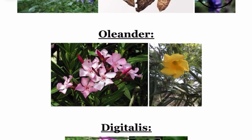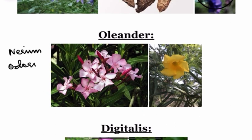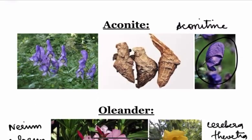Then we have Oleander, which has two different types: Nerium Odorum and Cerebrothivacea. The active principle in Nerium Odorum is Follarin or Oleanderin, and in Cerebrothivacea it is Cerebrin or Thivetin. This is Pink Oleander and this is Yellow Oleander. Both act through the Sodium-Potassium ATPase pump, so Digibind is effective in both Oleander as well as Aconite.